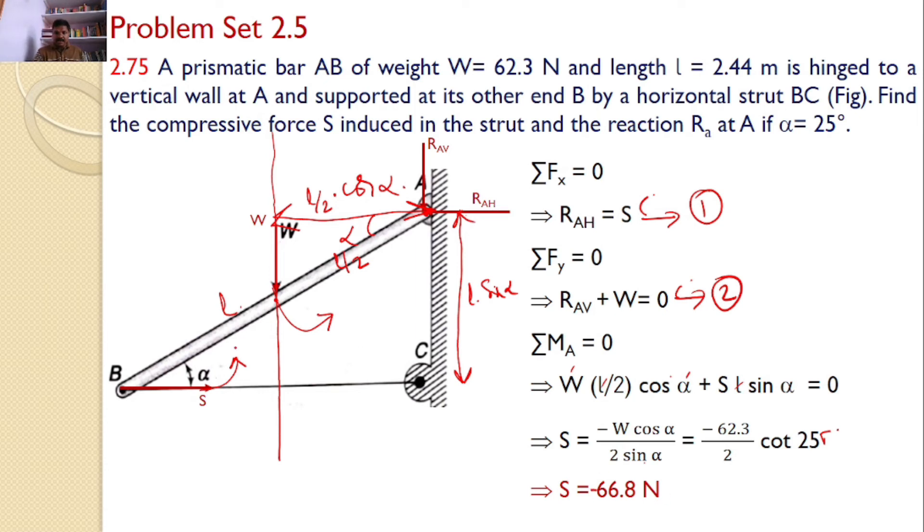Hence upon simplification I will get S equals minus 66.8 newtons. What is the meaning of that minus? Minus indicates the initial assumed direction is wrong. Initially we are assuming it is a tensile force but now I can conclude that 66.8 newtons is a compressive force. The same thing is also mentioned in the problem and we also proved that S value is 66.8 newtons and it is compressive.